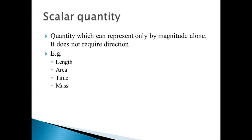Scalar quantities are quantities which can be represented only by the magnitude. For example, length. If we have to measure a length from this end to this end, we can directly measure this length. If this is 30 centimeters, we can directly say that the length of this material is 30 centimeters. We require only magnitude to represent length. Length is a scalar quantity — scalar quantity does not require direction.